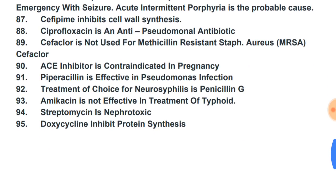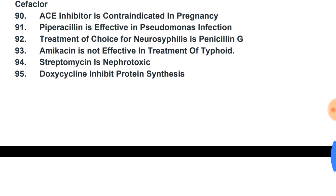ACE inhibitors are absolutely contraindicated in pregnancy. Piperacillin is effective in Pseudomonas infection. Treatment of choice for neurosyphilis is penicillin G (crystalline penicillin). Amikacin is not effective in the treatment of typhoid — for typhoid, give ciprofloxacin or azithromycin.